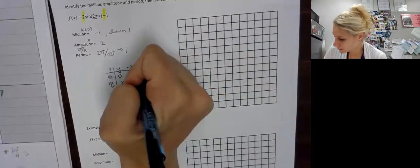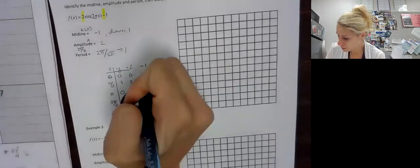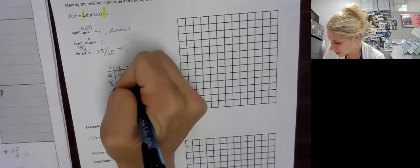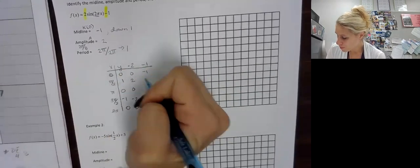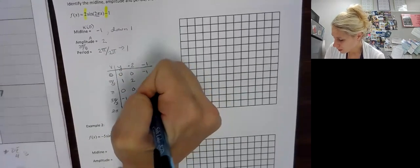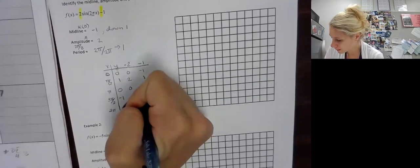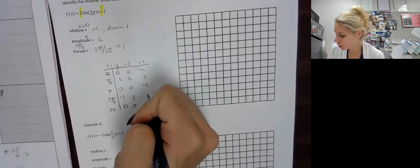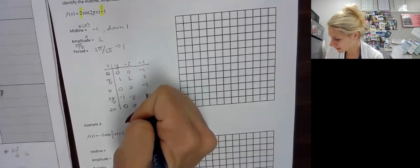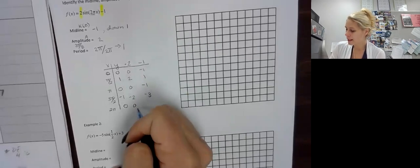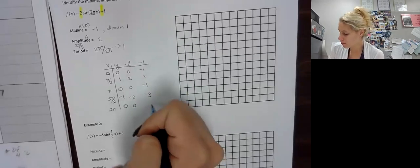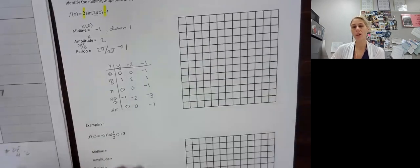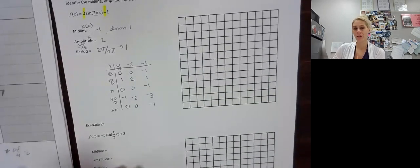And then we subtract 1: 0 minus 1 is negative 1; 2 minus 1 is 1; 0 minus 1 is negative 1; negative 2 minus 1 is negative 3; and 0 minus 1 is negative 1. Remember, these are the Y values of our final coordinates.